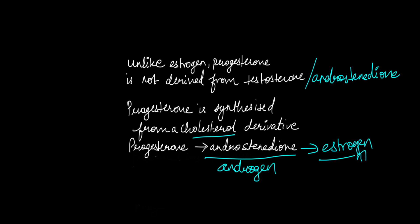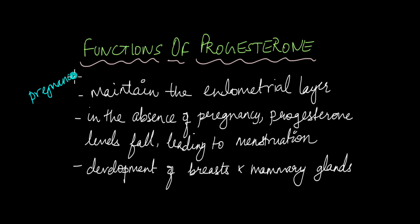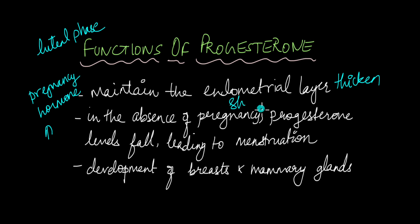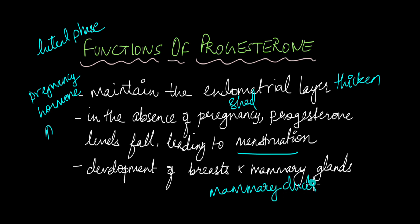Let's talk about the functions of progesterone. It is known as the pregnancy hormone, but even before pregnancy occurs, the endometrial layer needs to be maintained properly so that implantation can occur. During the luteal phase of the menstrual cycle, progesterone levels increase as the degenerating corpus luteum produces more progesterone, causing the endometrial layer to thicken in the uterus. In the absence of pregnancy, progesterone levels decrease, and with no progesterone to maintain the endometrial layer, it is shed by the process of menstruation. If pregnancy does occur, progesterone is involved in the development of the breasts, mammary glands, and mammary ducts. After pregnancy ends — after giving birth — progesterone is also involved in the production of milk, which is the lactation process.